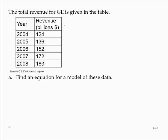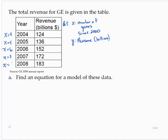So what I'm going to do is let x represent the number of years since 2000, and we'll let y represent the revenue in billions. So since x is the number of years since 2000, then x would equal 4, 5, 6, 7, and 8.